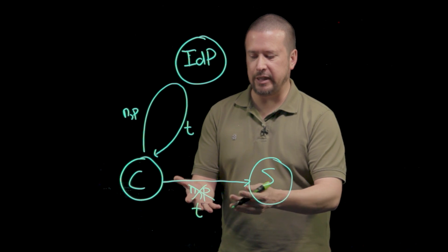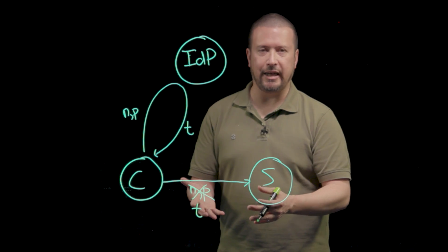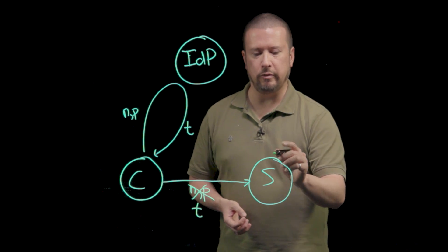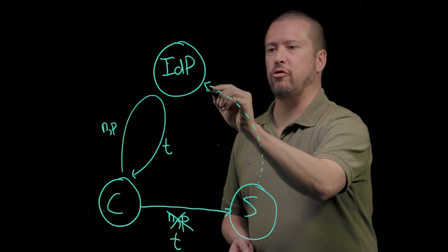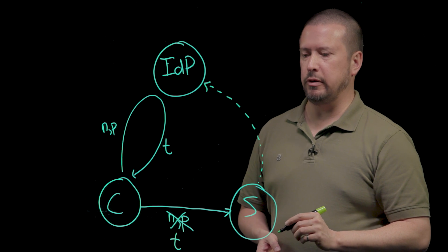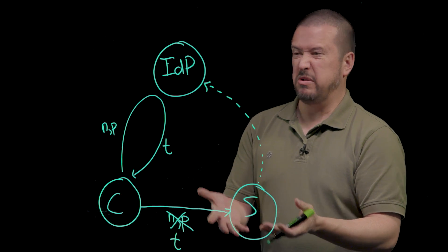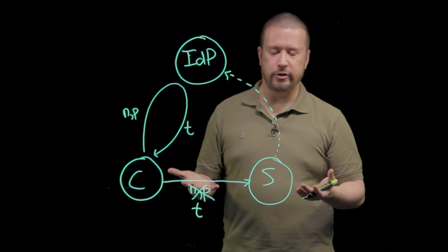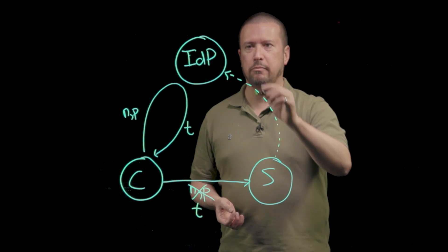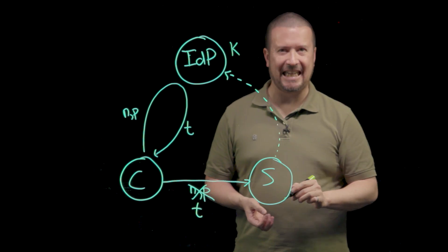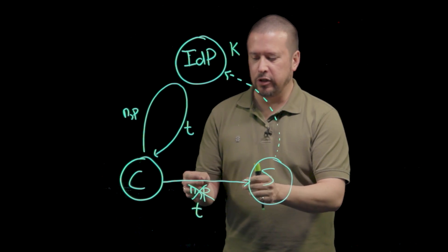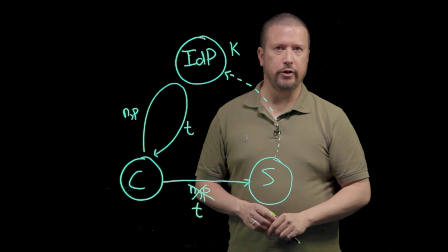The server is then able to take that security token and validate that it's a legitimate security token because the server has a trust relationship with the identity provider. And that trust relationship says that this server can either, say, send the token to the identity provider to get it validated or simply knowledge of the identity provider's signing key is enough to check the cryptographic signature on the token.